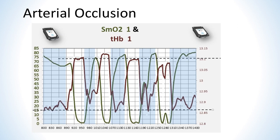This graph shows arterial occlusions during isometric contractions. The blue shaded areas indicate the rest between loads. Time is on the horizontal axis, with SMO2 on the left vertical axis and THB on the right. Note how the THB increases rapidly and reaches a very steady plateau while the load is maintained, then quickly returns to its value before the load. The THB plateau, the rapid drop in SMO2, and the very low SMO2 value are typical of arterial occlusions.